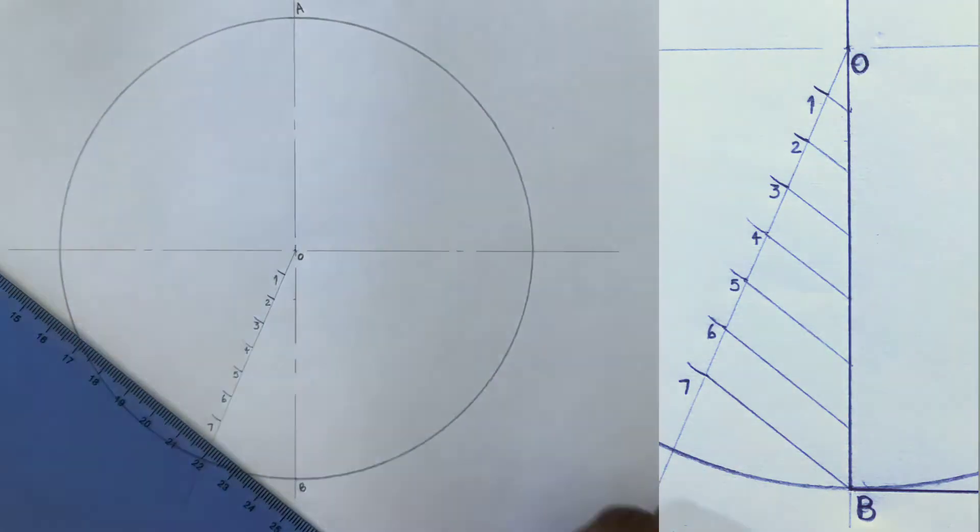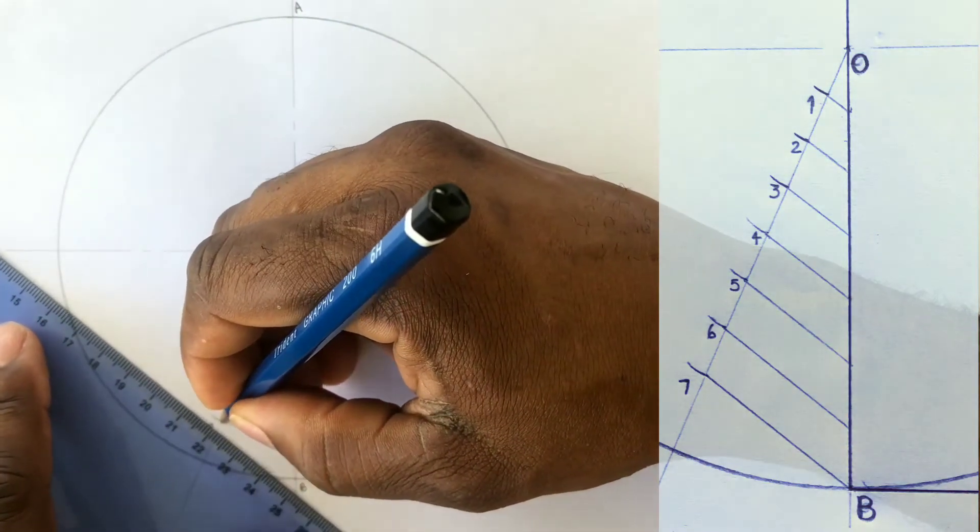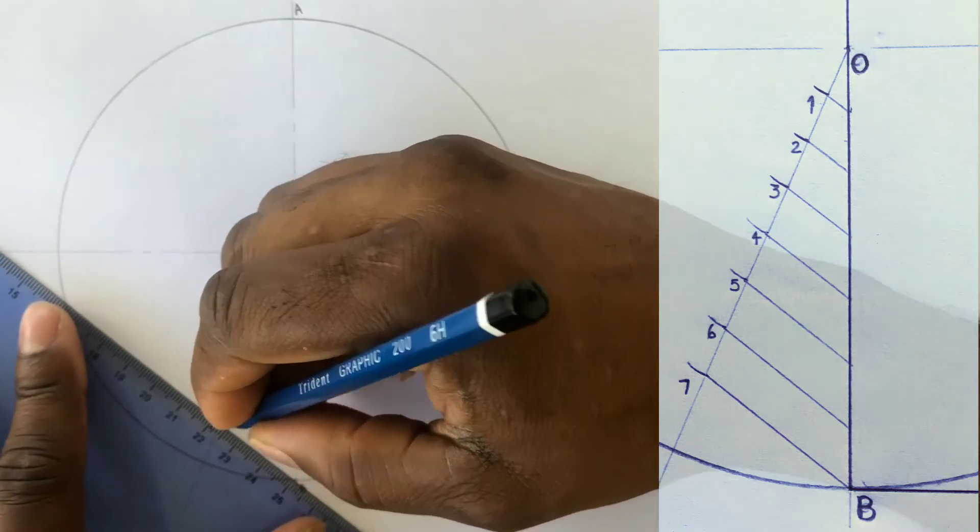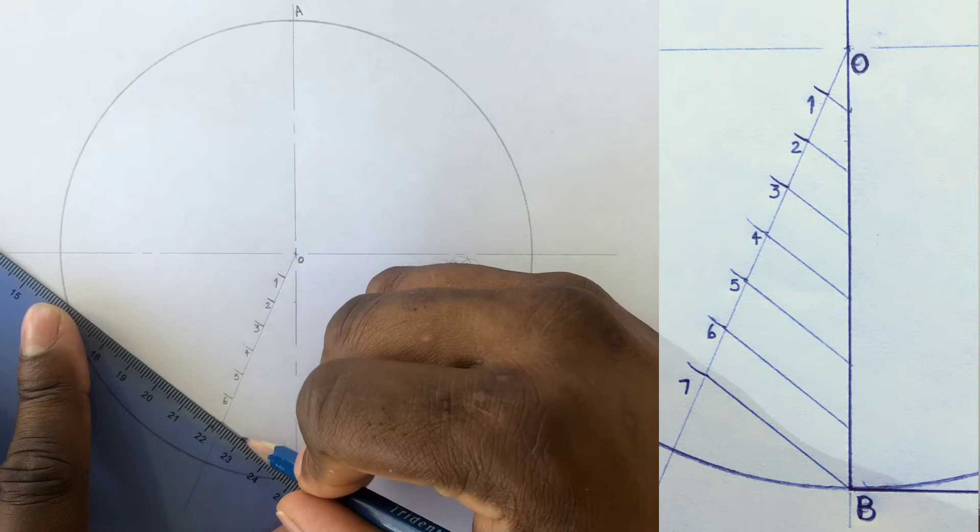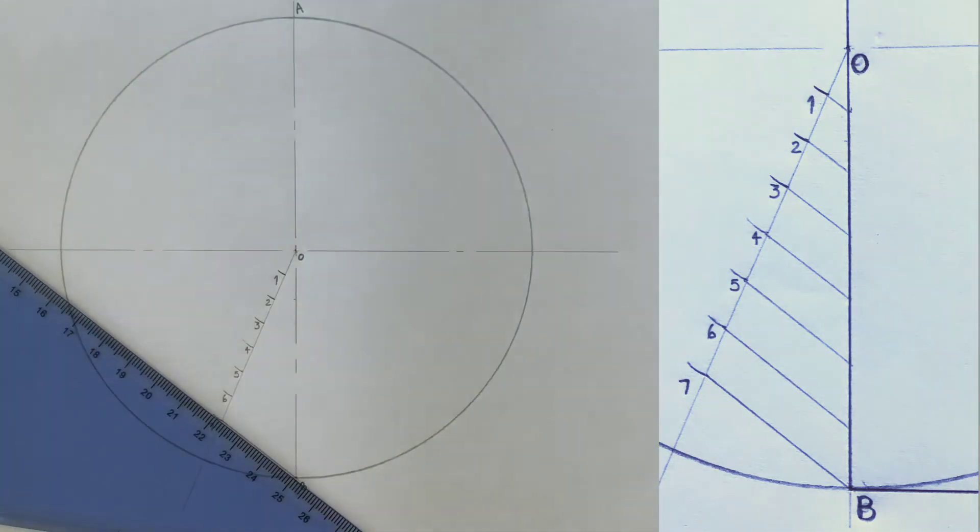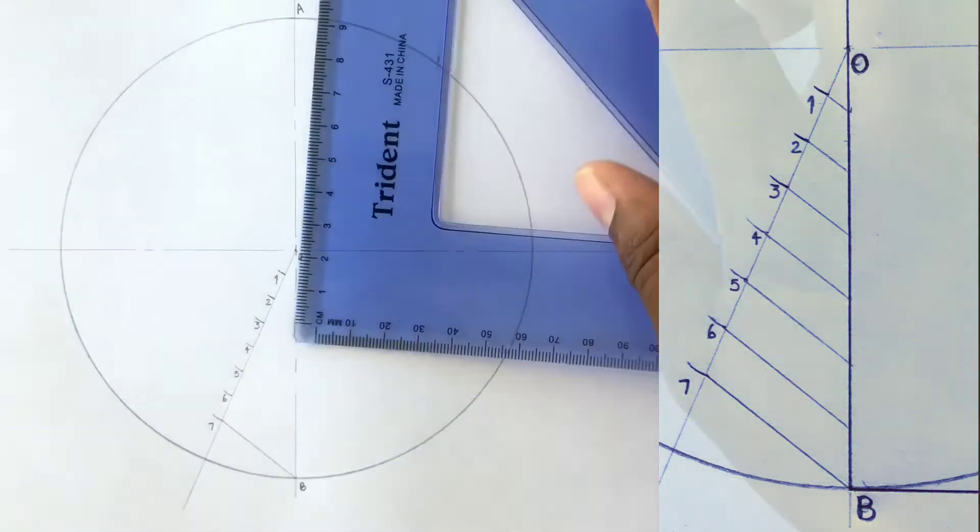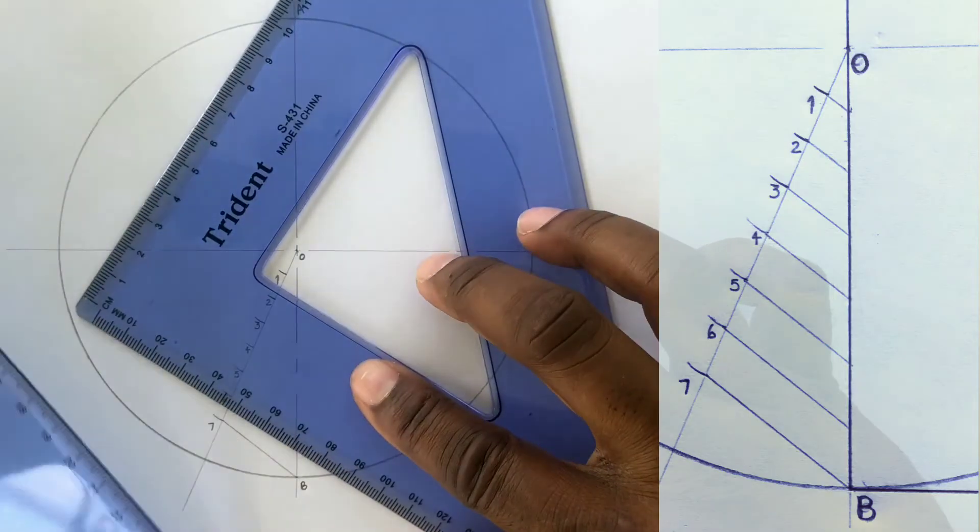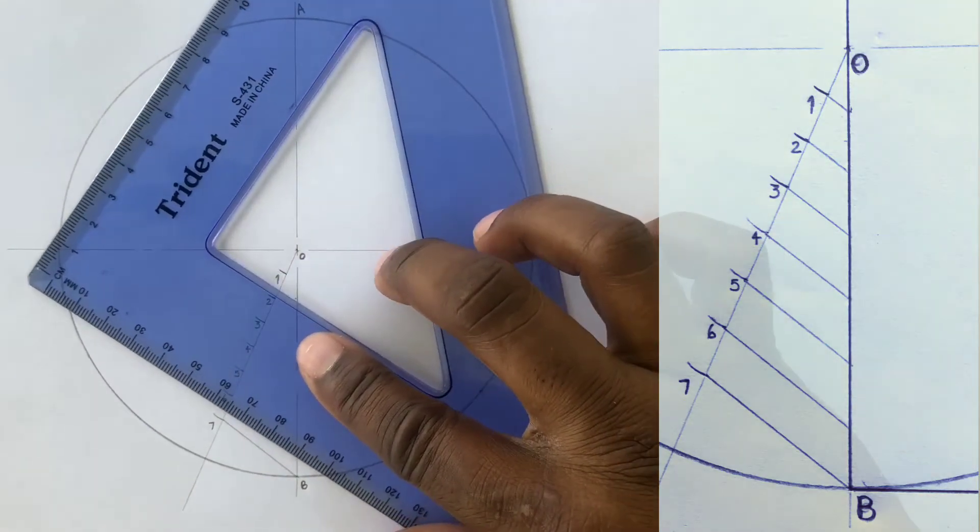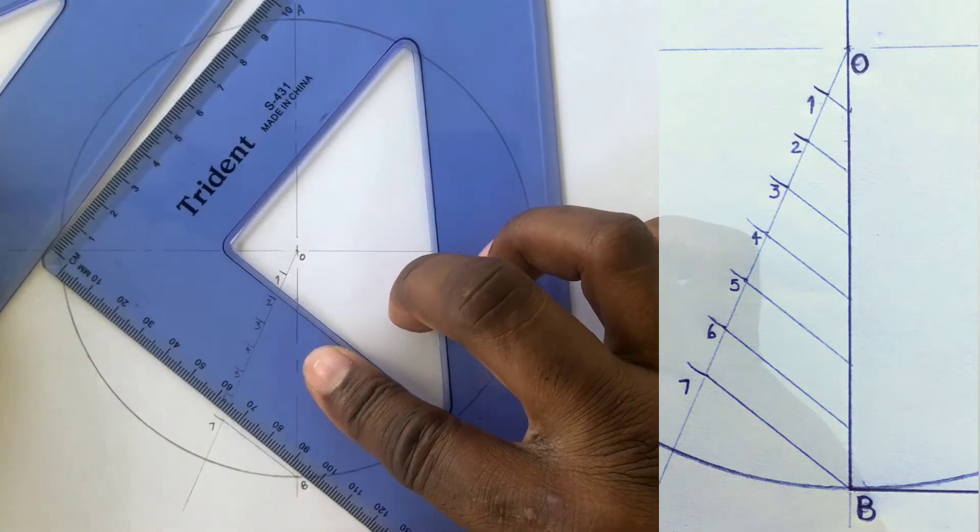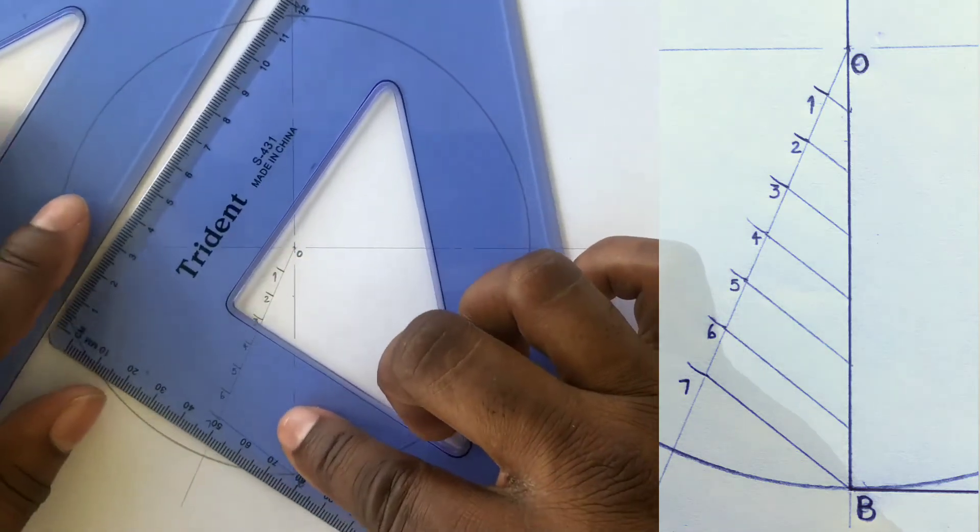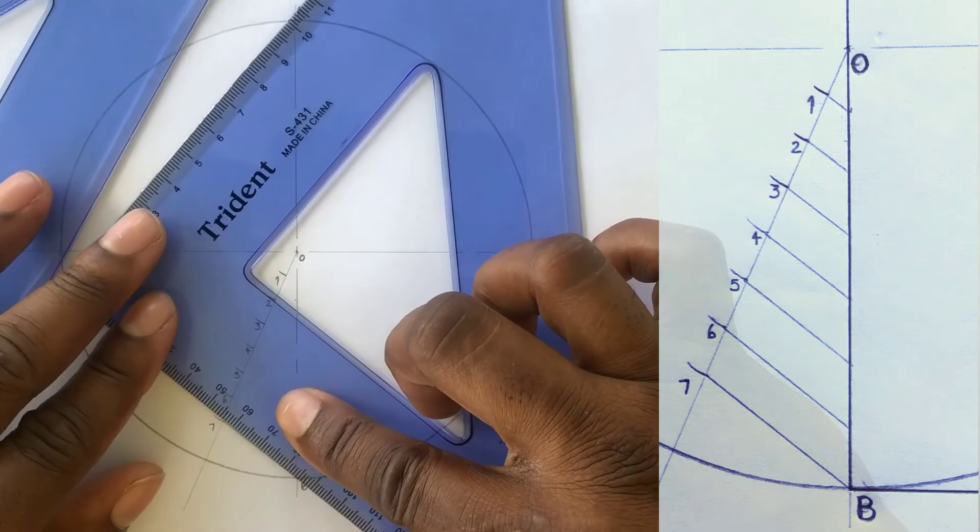From the seventh division, you will draw a line to point B. Place a set square along the line you previously drew. Now you will place a second set square along the first set square.